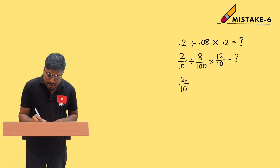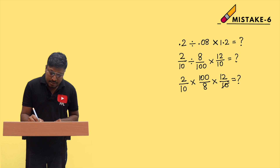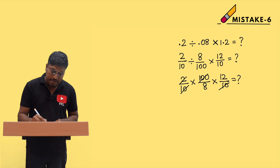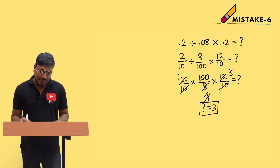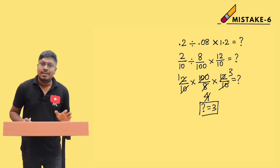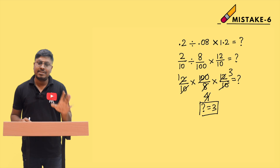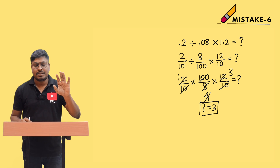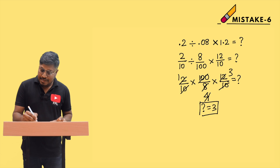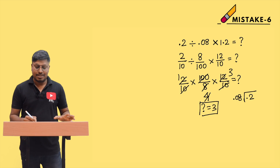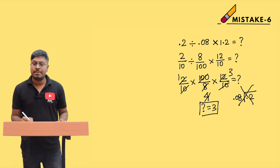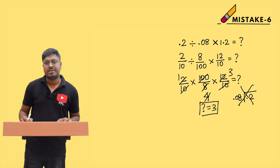Converting the division to multiplication: (2/10) × (100/8) × (12/10) = ? Cancel 10 and 10, and 2 and 8 — 8 goes into 8 once, giving a factor of 3. So the answer is 3. Remember: wherever you see decimal values, remove them first before multiplying, dividing, or adding. Many students waste time doing decimal division directly — don't do that.